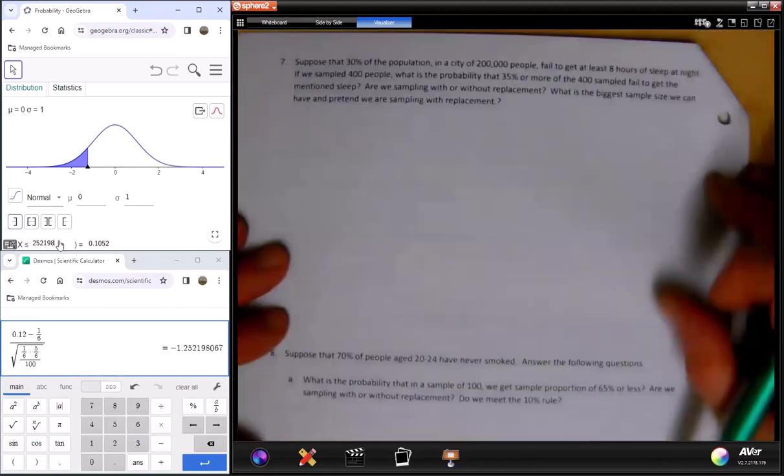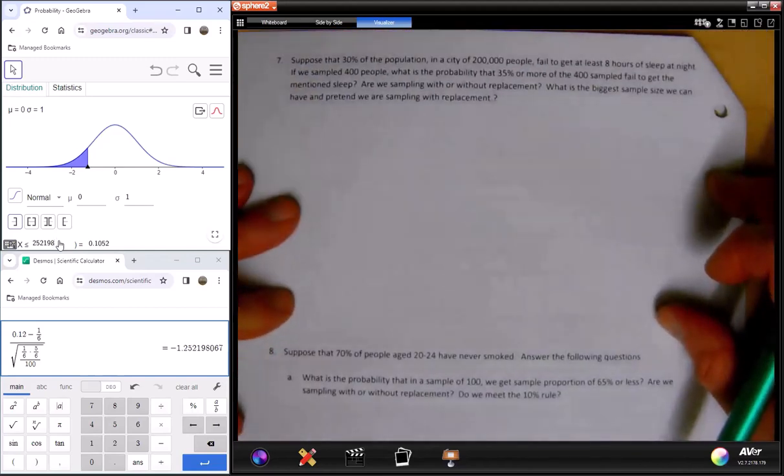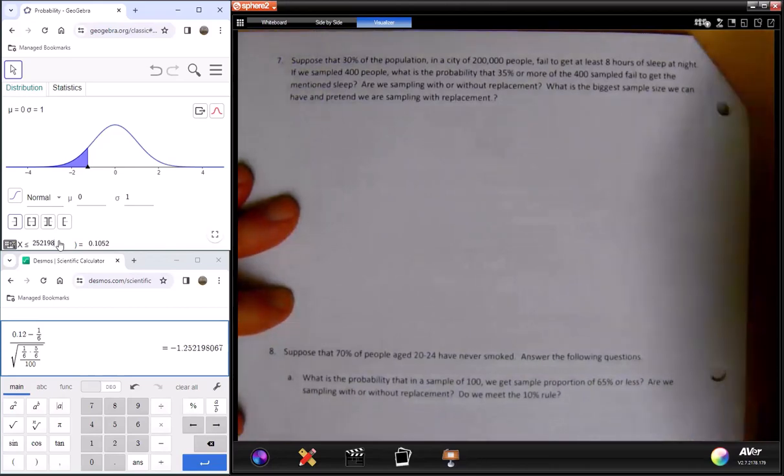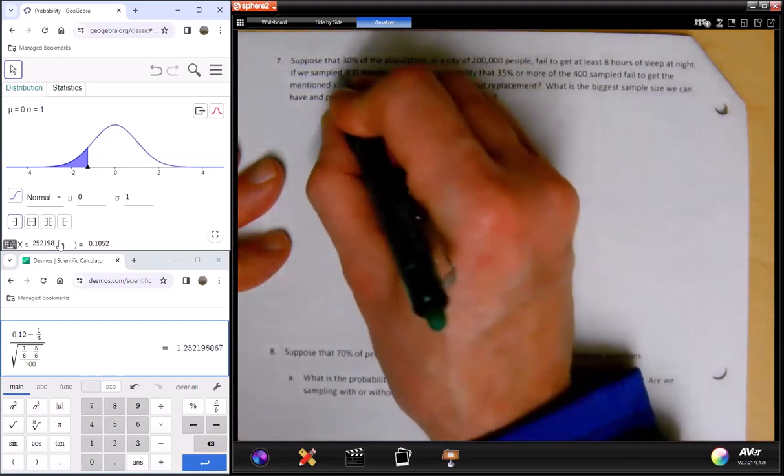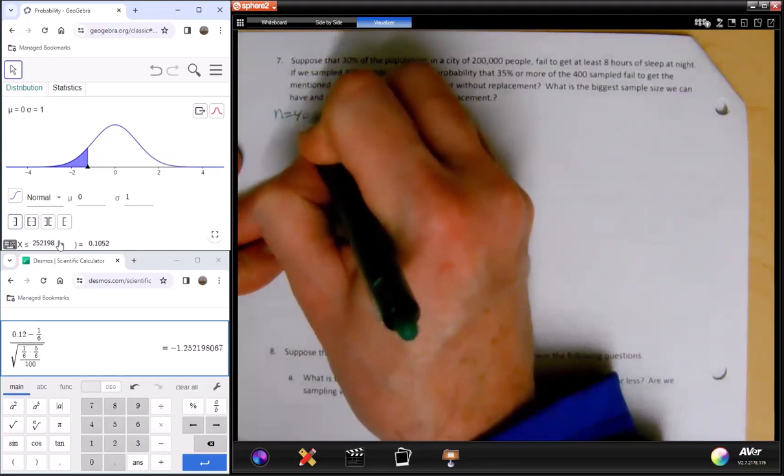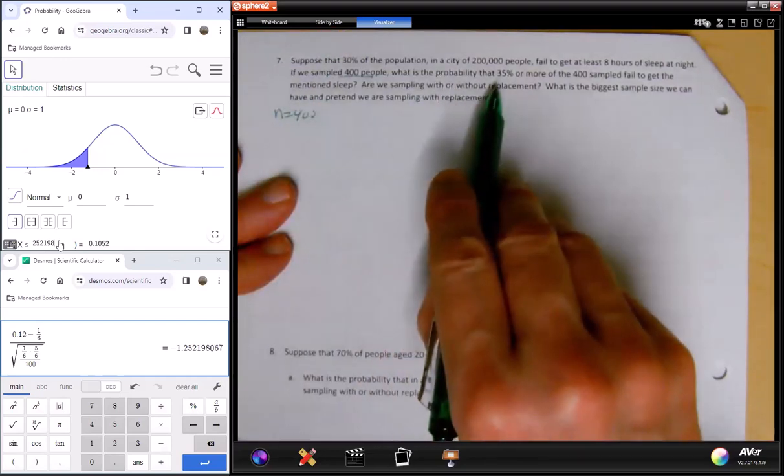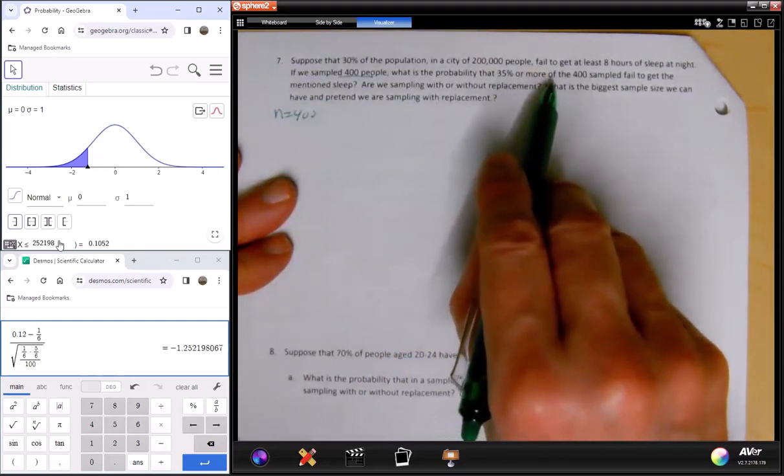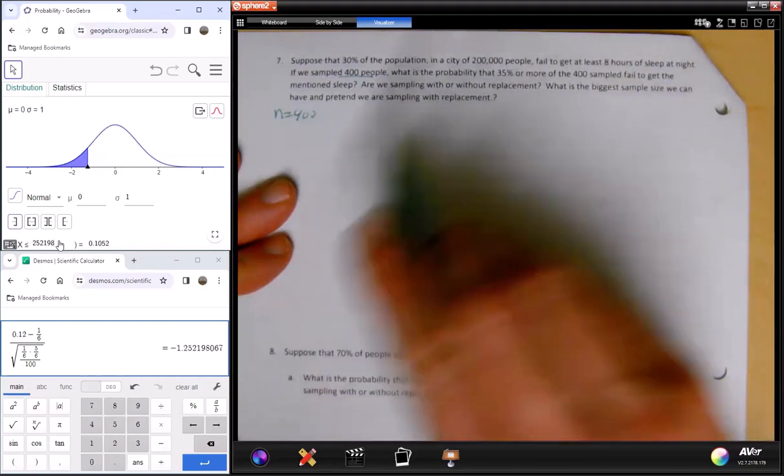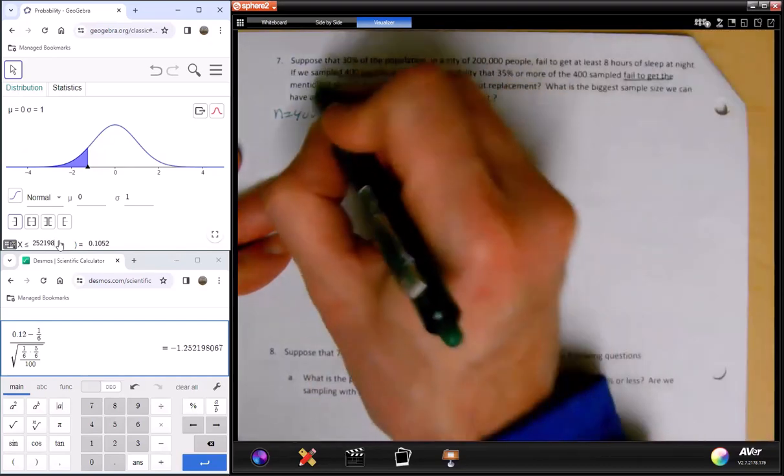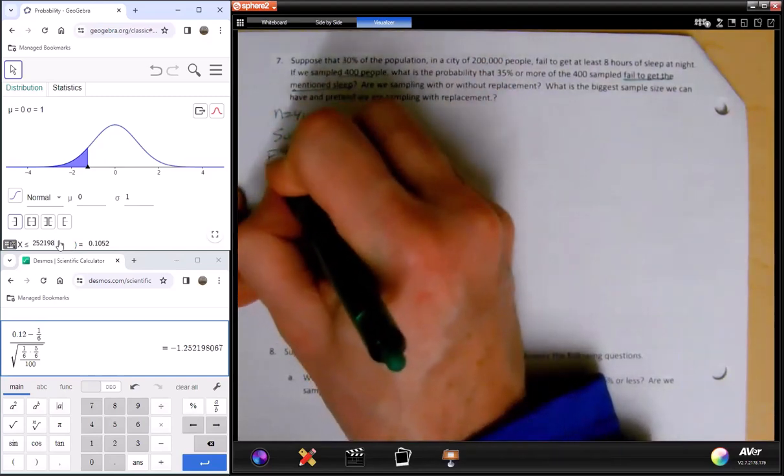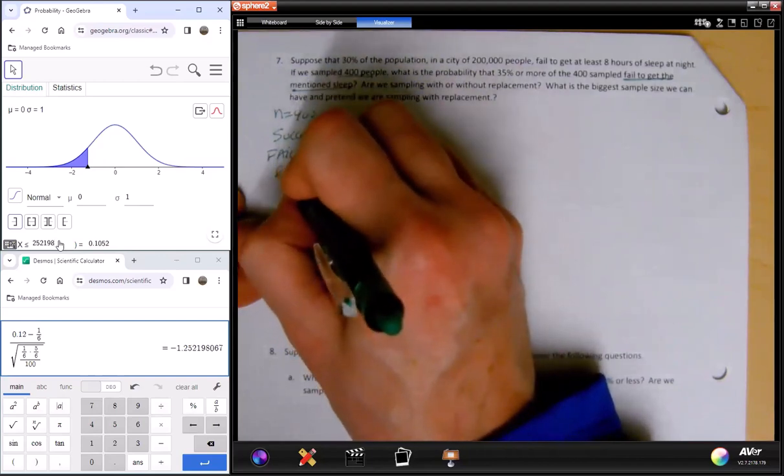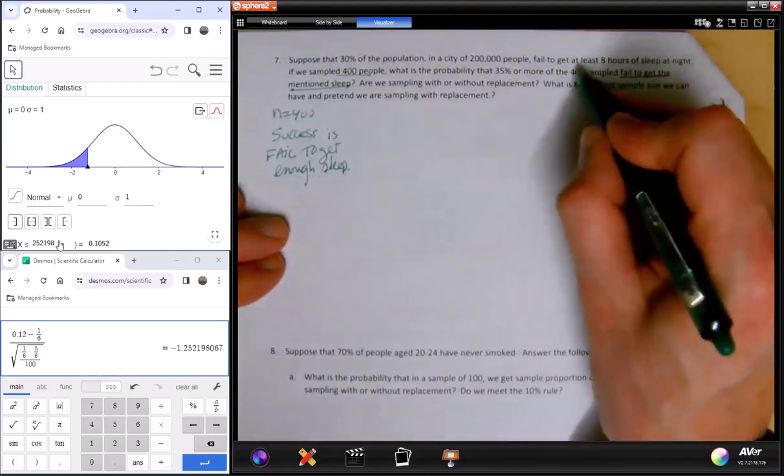Suppose that 30% of the population in a city of 200,000 people failed to get at least 8 hours of sleep at night. If we sample 400 people, my sample size is going to be 400. What is the probability that 35% or more of the 400 samples failed to get the mentioned sleep? This is all about, what is success here? Success is fail to get sleep, which is defined as at least 8 hours of sleep.